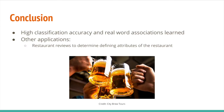In conclusion, we see that our model got high classification accuracy and that it did appear to learn real word associations while doing classification. Some other applications for this model for future work could potentially be restaurant reviews, to determine the defining attributes of the restaurant as determined by users. Thank you.